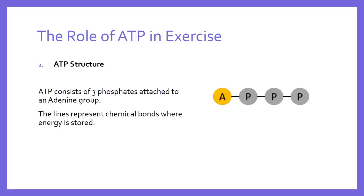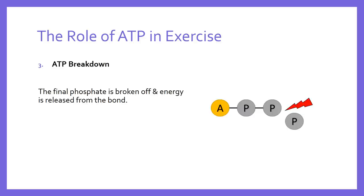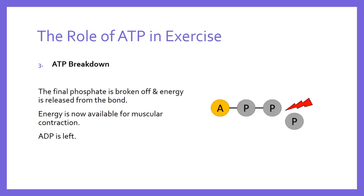During exercise, the final phosphate — the third phosphate along from the adenine group — is broken off chemically. As it is broken off, the bond that was holding it onto the second phosphate releases energy, which is now available to drive muscular contraction. The compound left behind when we break off one of those phosphates is known as ADP, which is adenosine diphosphate — 'di' meaning two, 'tri' meaning three. So adenosine triphosphate becomes adenosine diphosphate, and the energy released is used in muscular contraction.